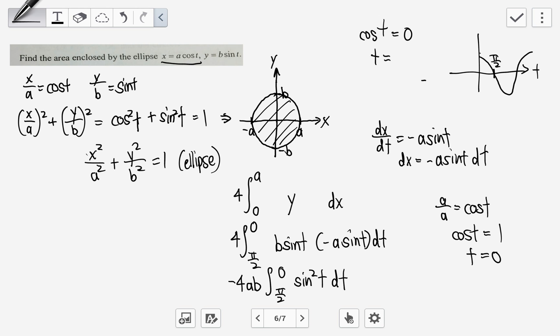To solve for this, I need to make use of the identity cosine 2t equals 1 minus 2 sine squared t. So when I bring it, it becomes 1 minus cosine 2t. Then 2 sine squared t, I will bring over to the other side. So 1 minus cosine 2t over 2. I will just bring the 2 out of the integral. So I get minus 2ab, integrate 0 to pi over 2, 1 minus cosine 2t inside dt.